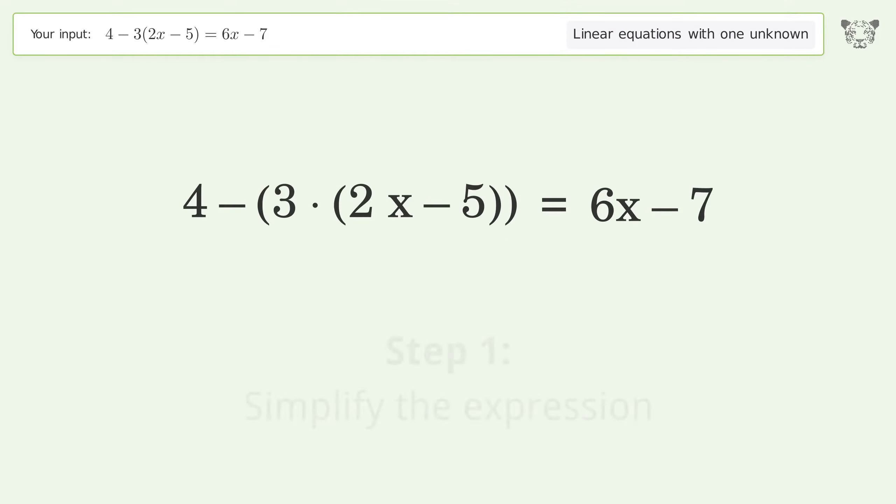Group like terms. Simplify the arithmetic. Group all x terms on the left side of the equation. Subtract 6x from both sides.